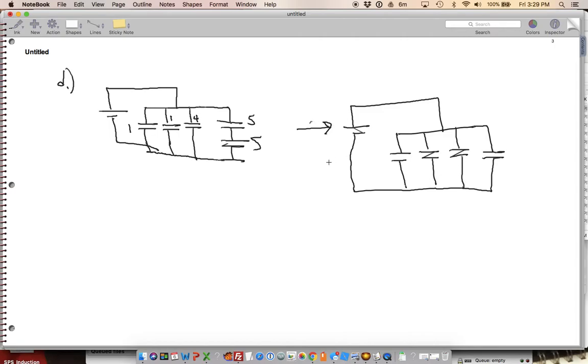So we're going to have the equivalent. This one right here is going to be 1 over CEQ equals 1 over 5 plus 1 over 5, which is equal to 2 over 5. And so then when we flip it, this becomes 5 over 2.